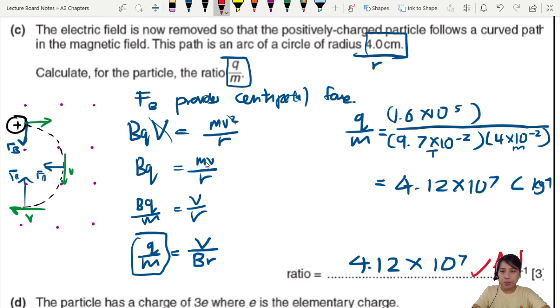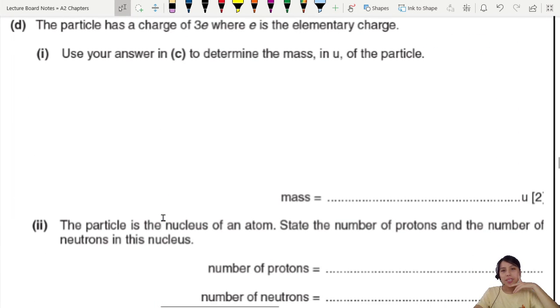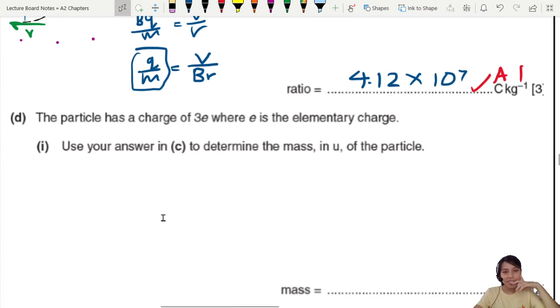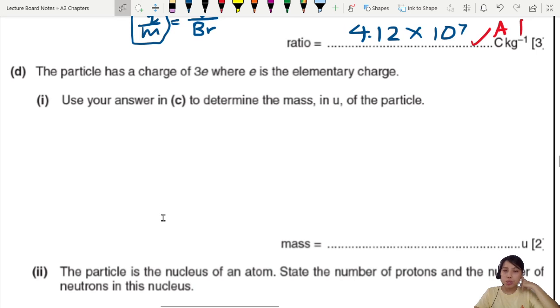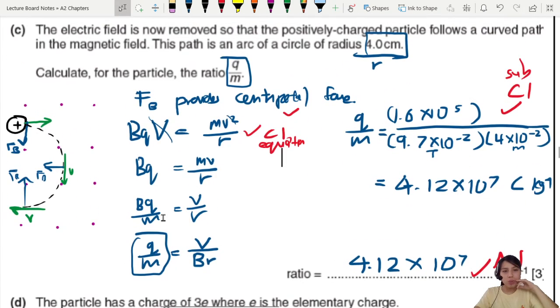So your ratio of Q over M should be 4.12 times 10^7 C per kg. I guess you could write 4.12 if you want to. That's A1. If you sub in your correct values, that's your C1. And if you equate both expressions, usually they will give one C1 mark for the equation. If they say explain, then they will give you a mark for explaining.